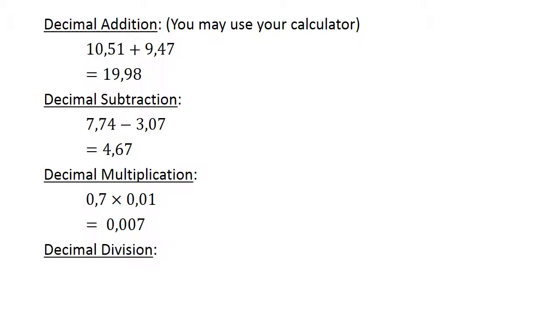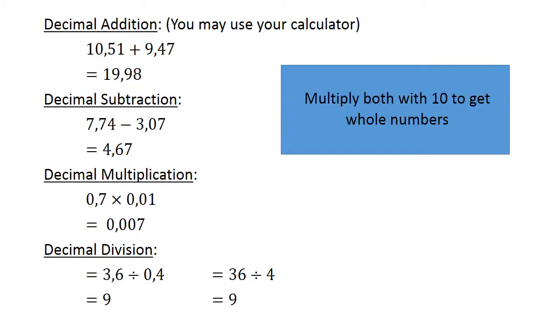Decimal division. 3.6 divided by 0.4. Multiply both by 10 to get whole numbers. 36 divided by 4 equals 9.